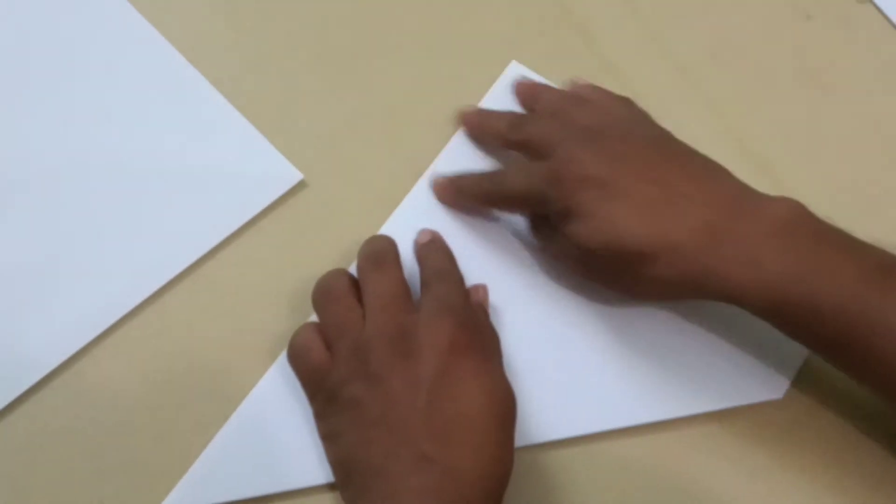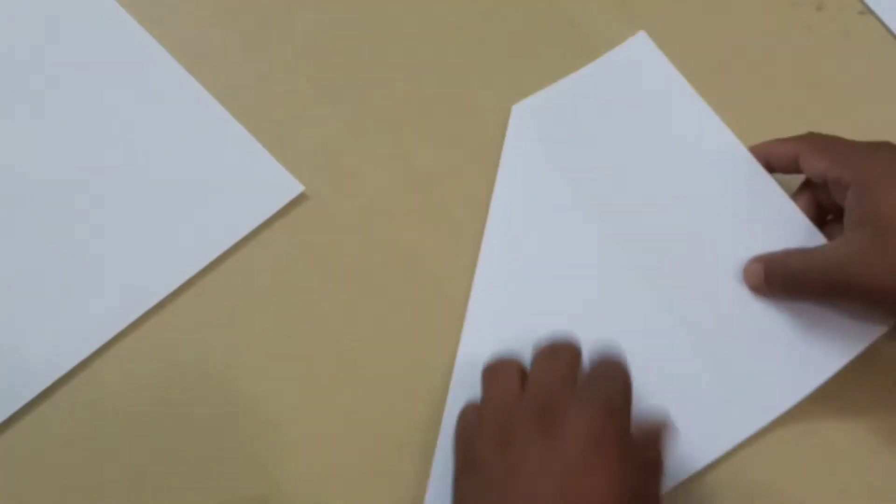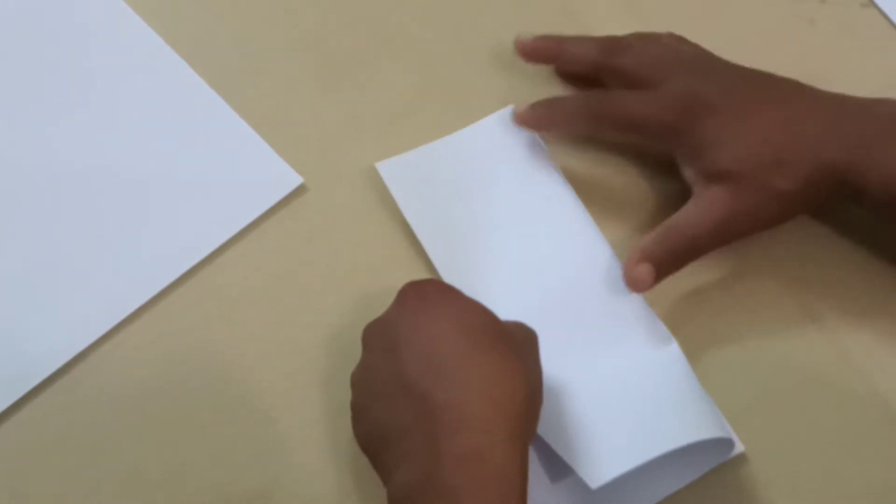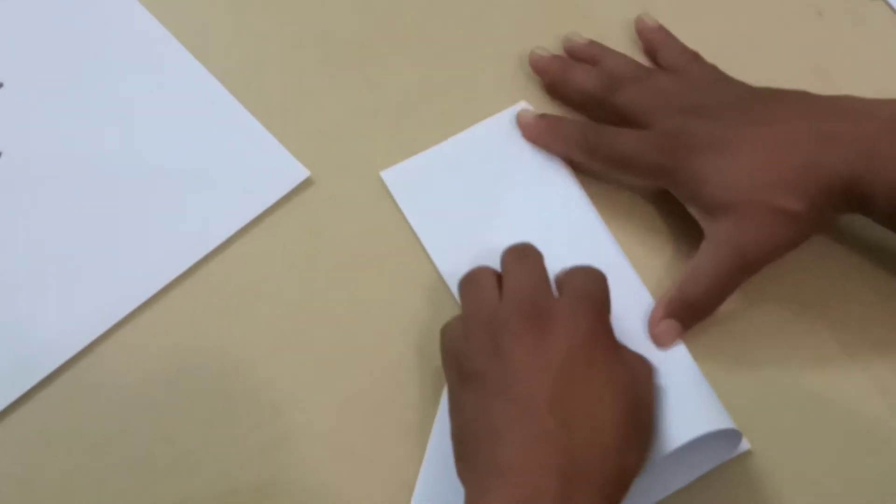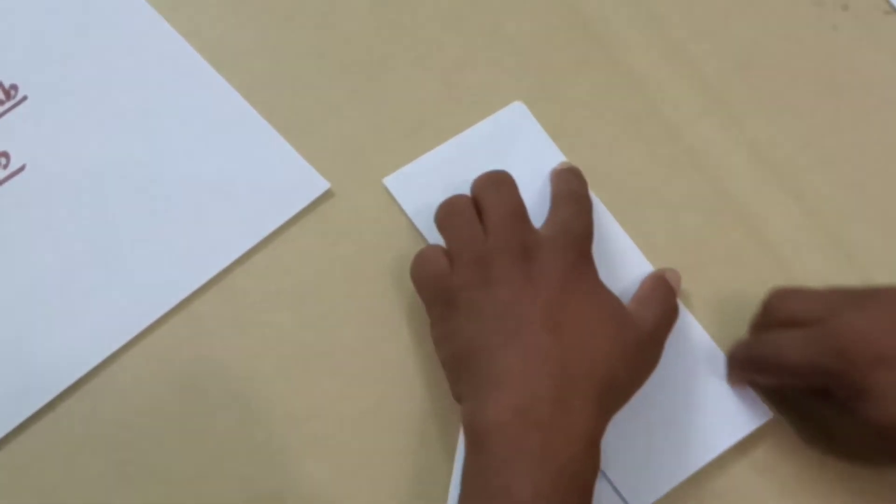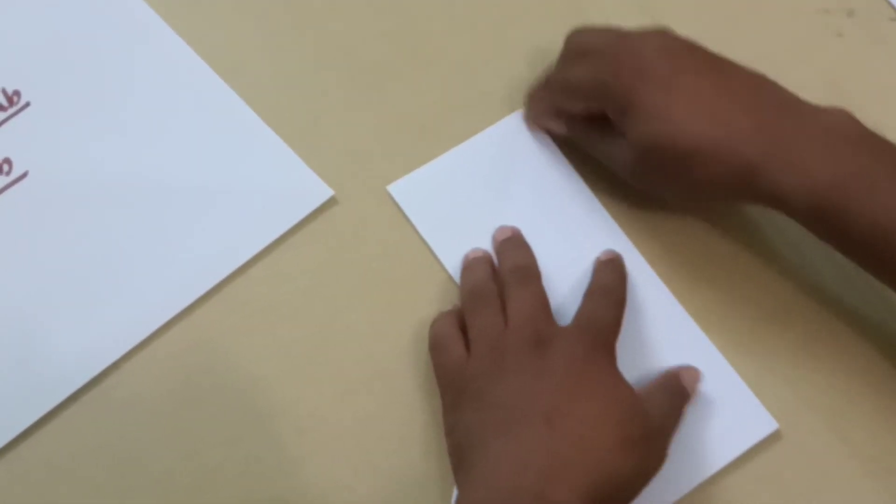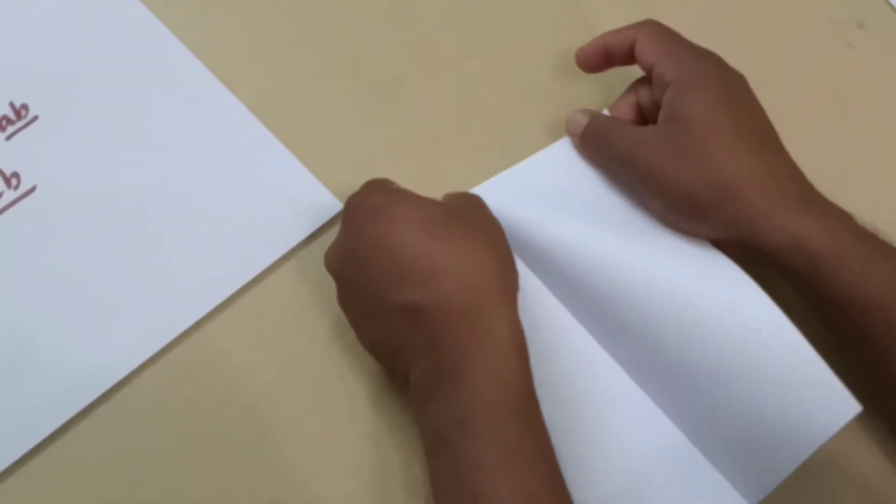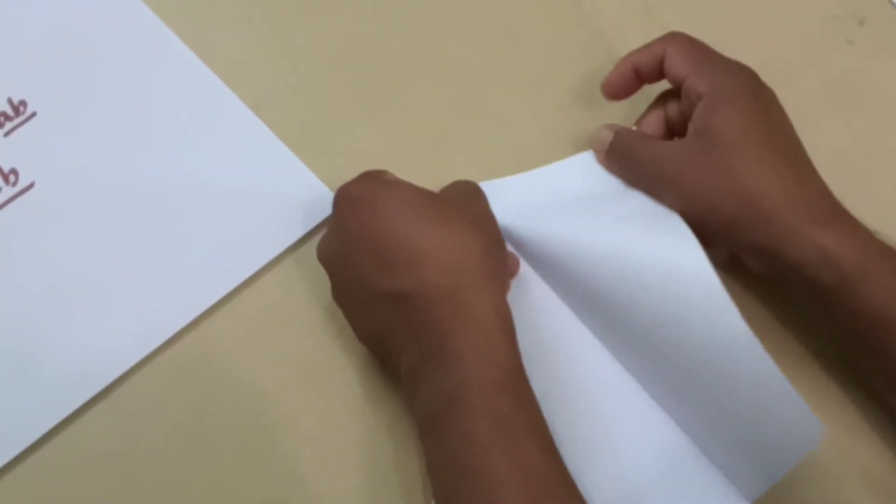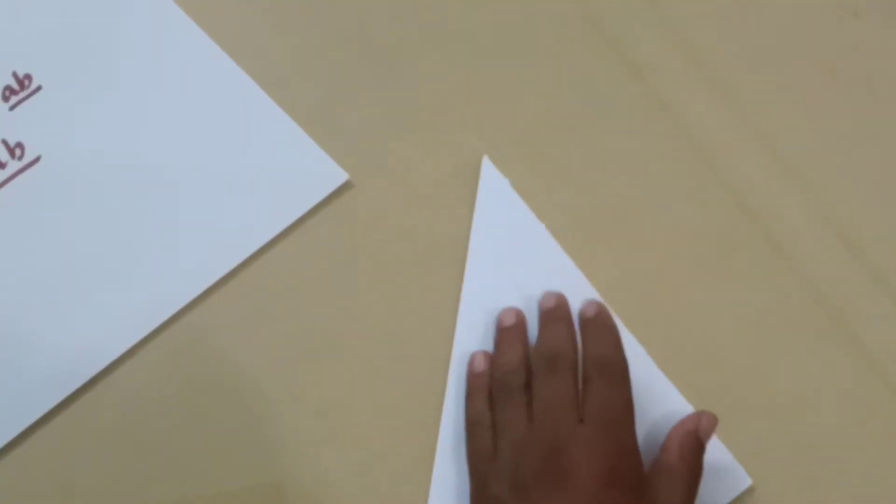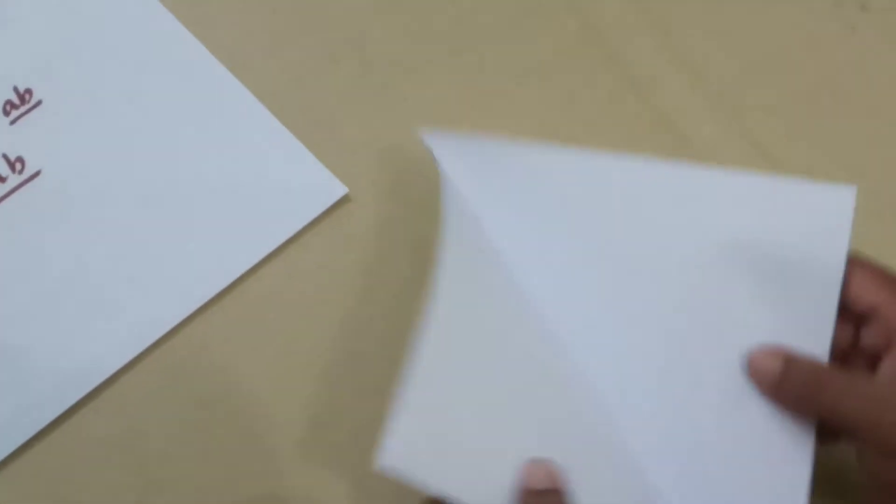So we'll cut off this extra piece. If you crease this properly with your nail you can easily tear it away. We don't need a pair of scissors for this. You can just tear it off. So there we are. We have a square.